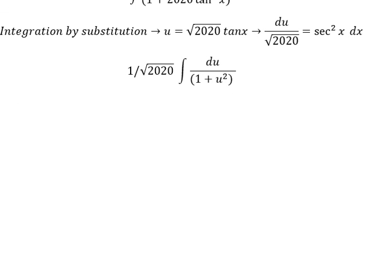We get du over the square root of 2020 over 1 plus u squared. You will get the arctangent of u and we place about C as a constant.